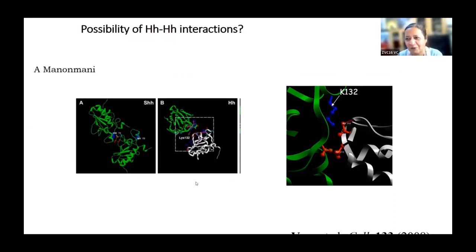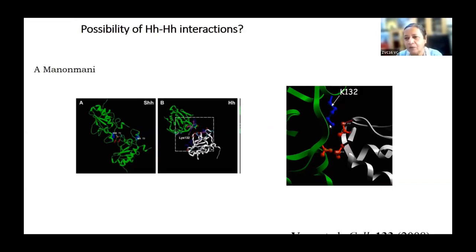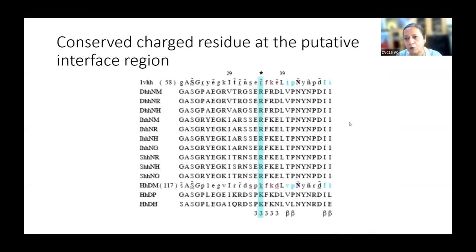One pose we particularly liked: there was a positively charged aspartate on one protomer shielded by three negatively charged residues on the other protomer. I still vividly remember Manonmani, myself, Neha, and Jitu all looking at lysine 132 and knowing it is an evolutionarily conserved residue sitting at the crystallographic interface of sonic hedgehog. In many homologues it is either a lysine or arginine, suggesting the positively charged nature at that site is important and could be the putative dimer interface region.